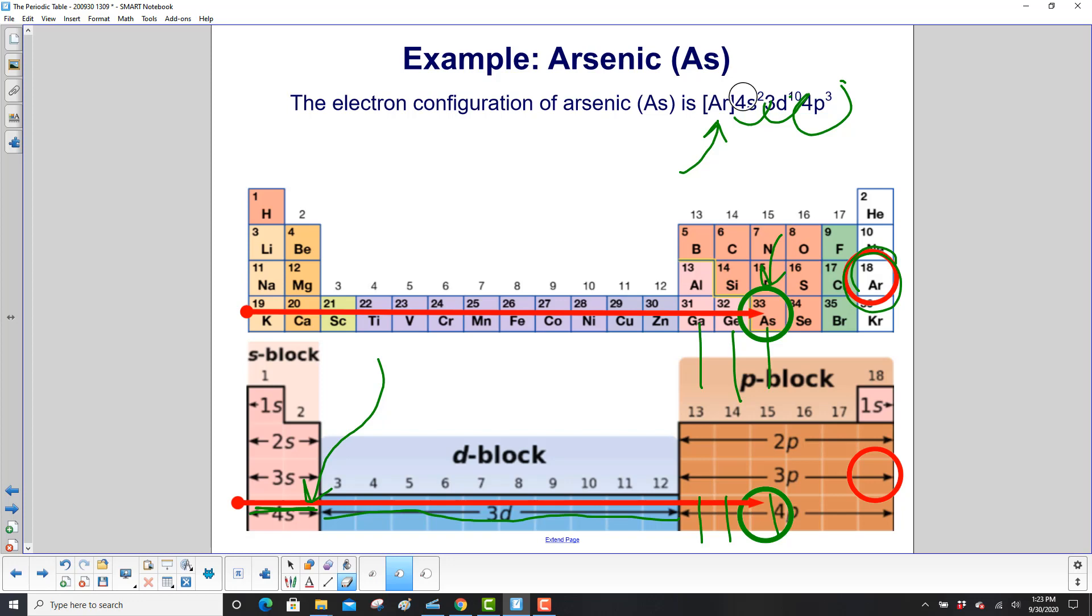So what do we have for arsenic? We have argon, 4s2, 3d10, and 4p3.